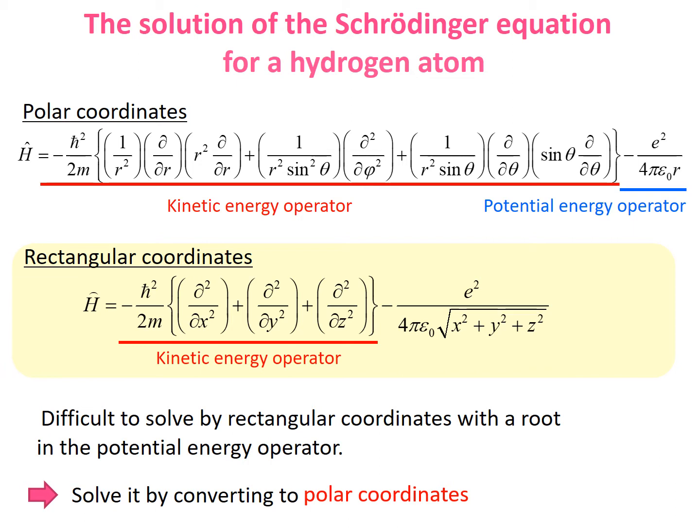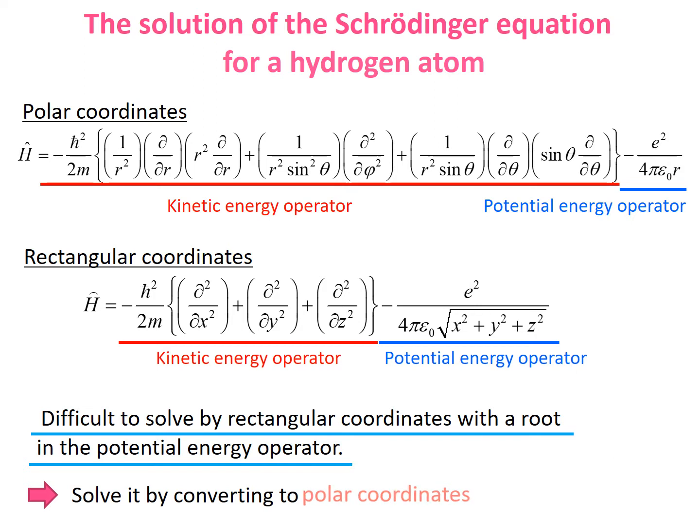In the case of the hydrogen atom, however, when we describe the potential energy with rectangular coordinates, the equation becomes complicated with a root at the denominator, which makes it hard as a whole to calculate. We need to convert the kinetic energy operator to polar coordinates to proceed.